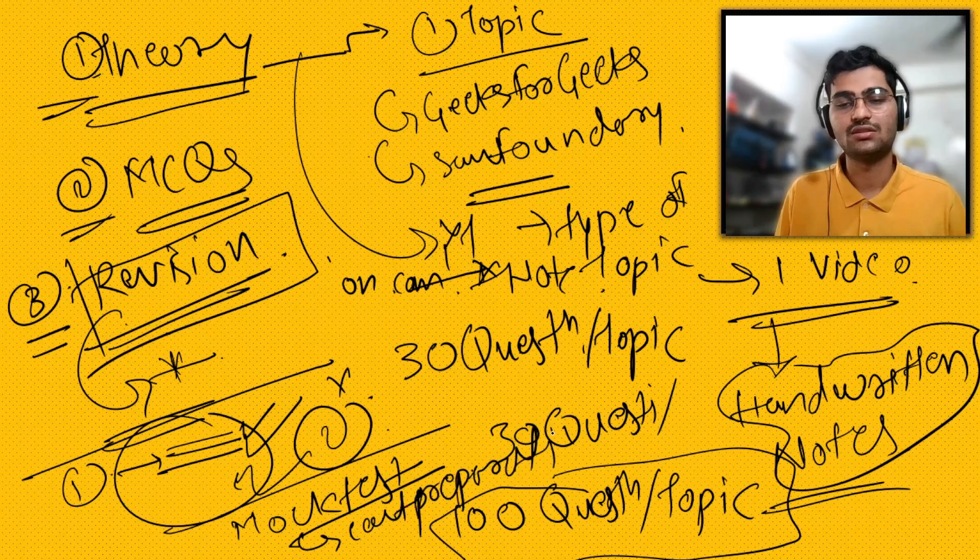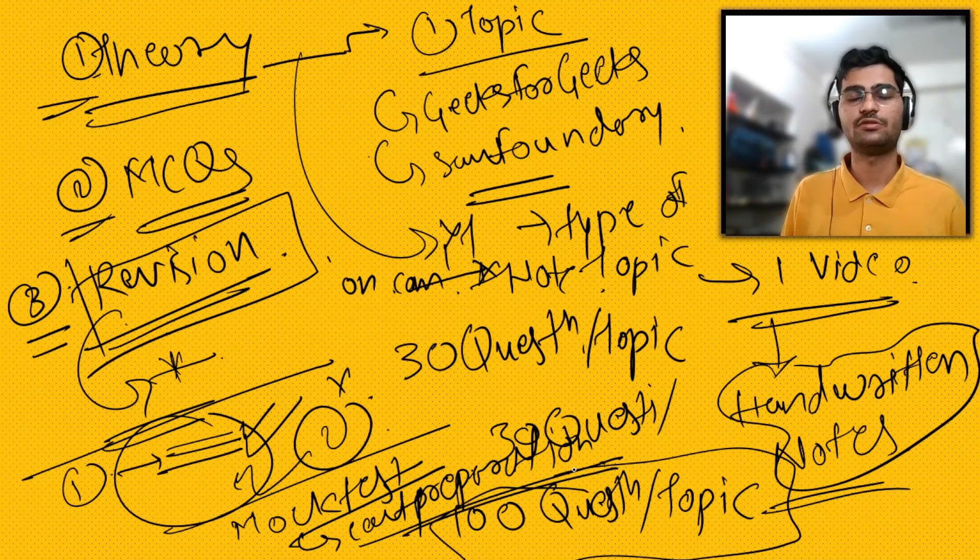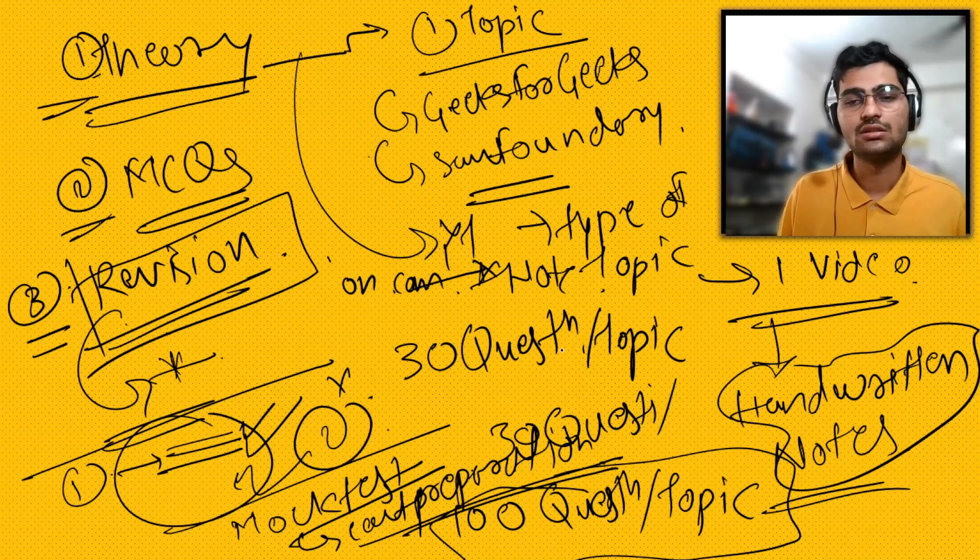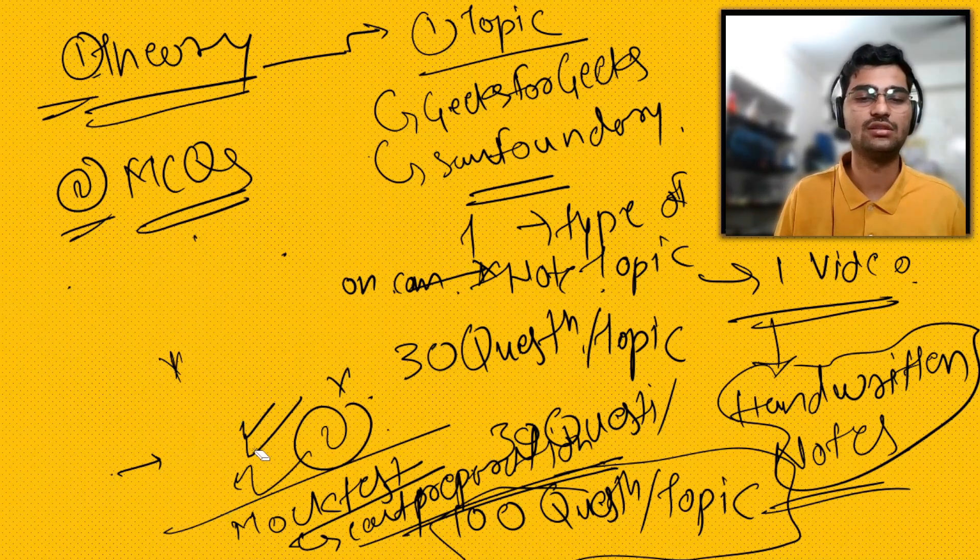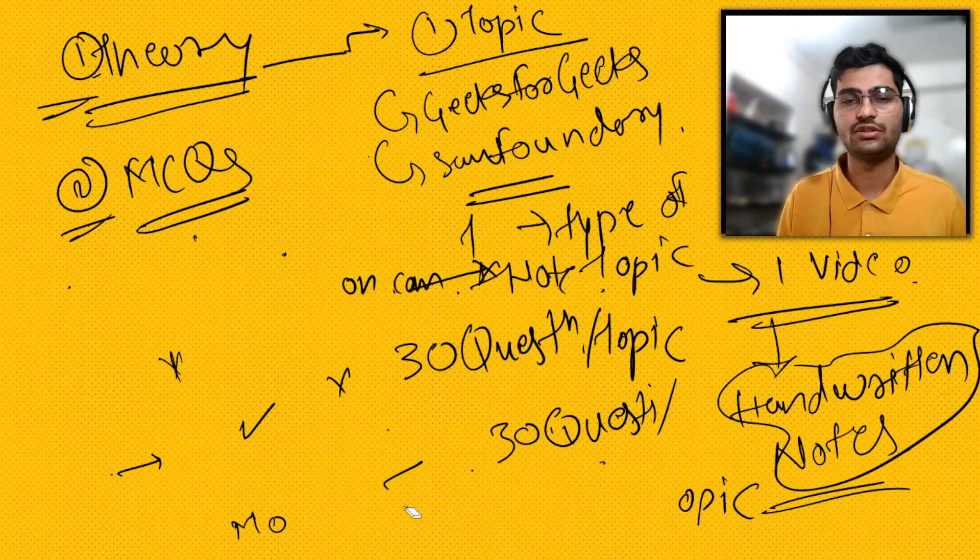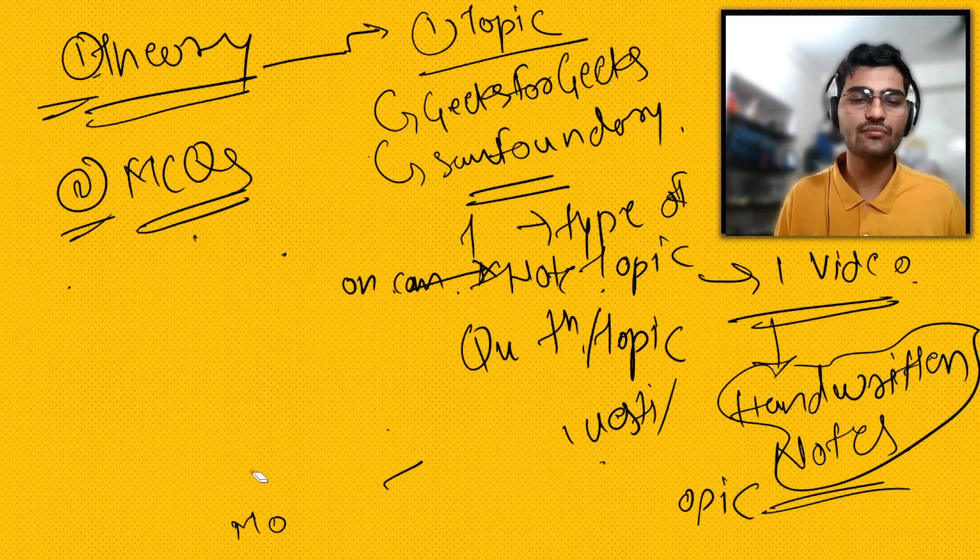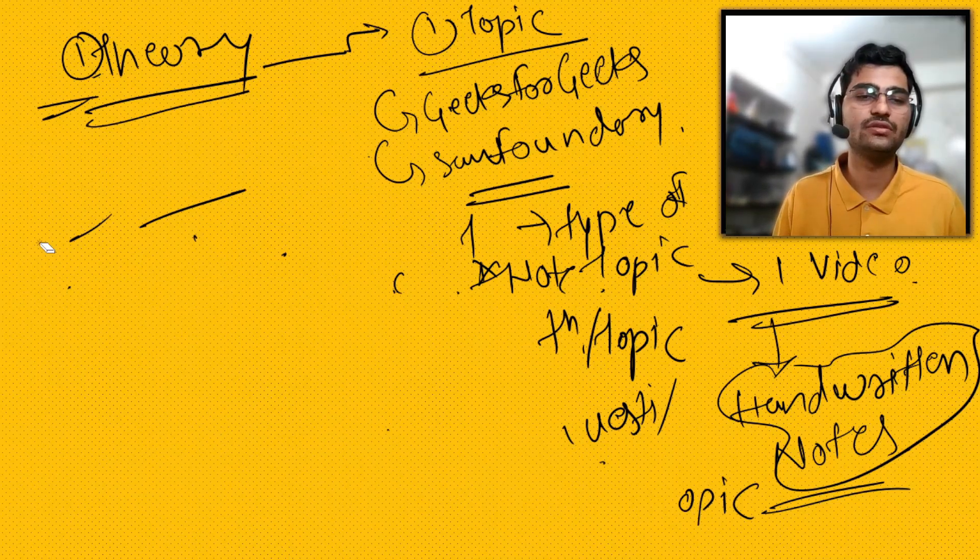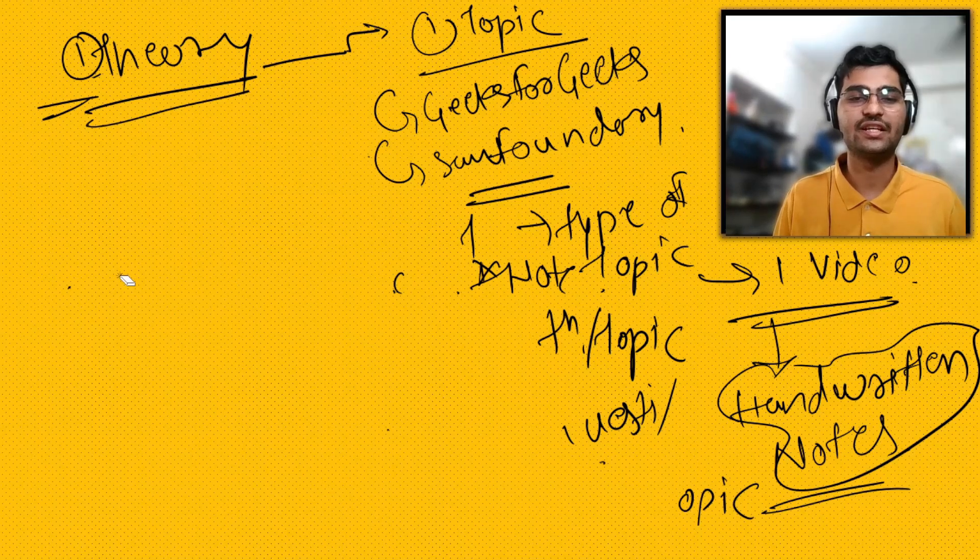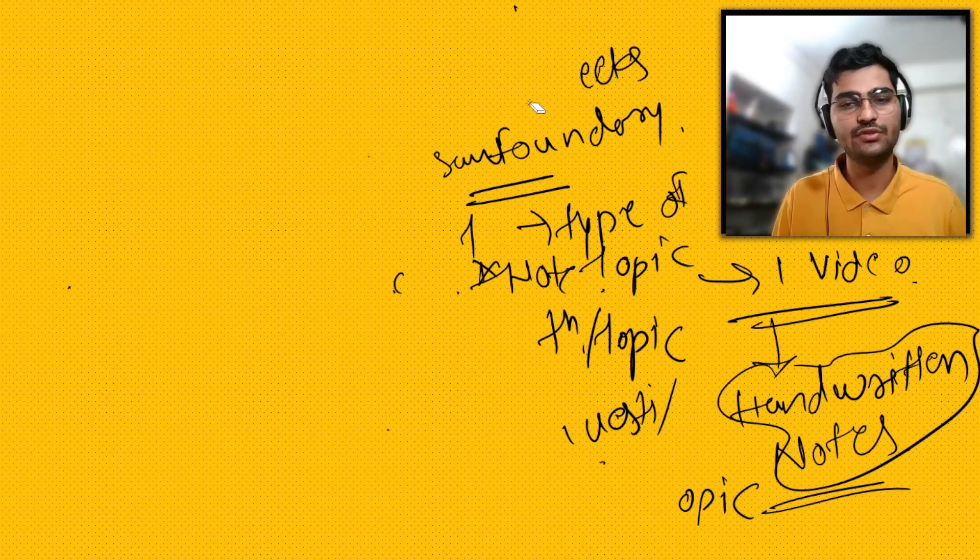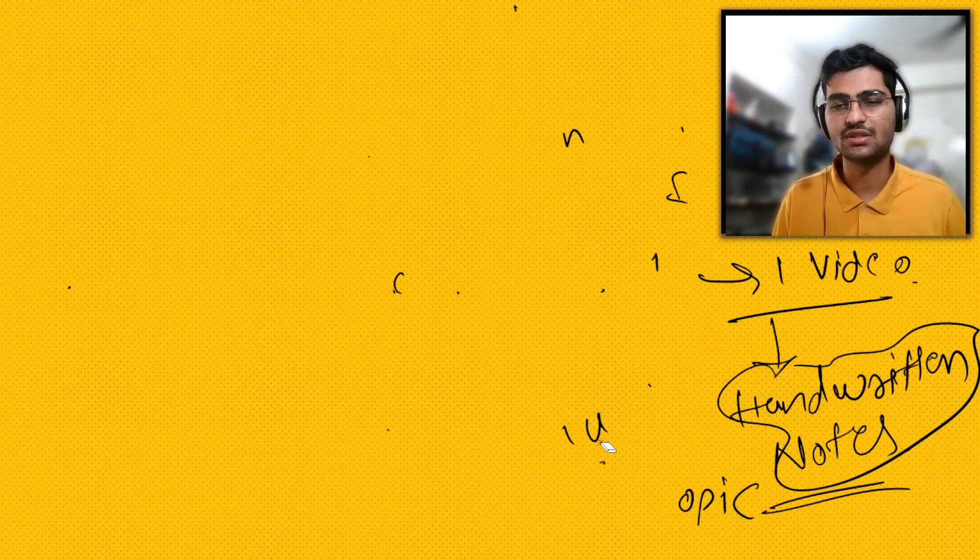Next most important thing is mock test. I did mock tests from ccatpreparation.com. Mock tests will help you a lot. It's not that you have to give from this website only, there are many other websites, but generally speaking this website helped me a lot. That's it for Object-Oriented Programming and these were the resources I used. It's not rocket science - just go for theory, solve MCQs, and you're good to go for the exam.